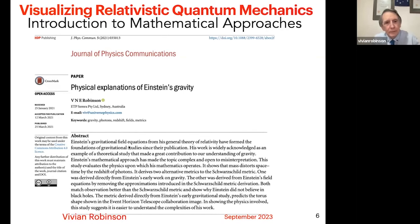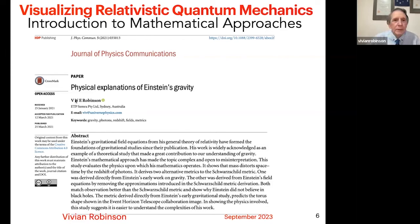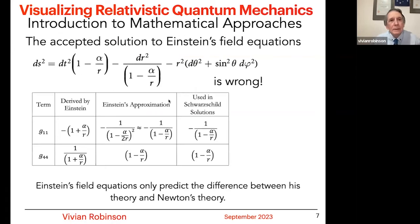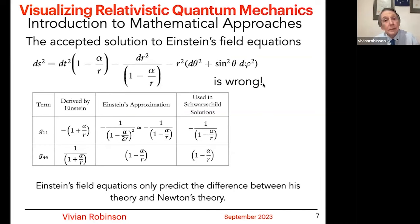Well, two and a half years ago, the Institute of Physics published a paper that I've written on physical explanations of Einstein's gravity. A major feature of that was that I showed that Einstein's mass-distorting spacetime was producing photon redshift. Now, what I'd like to show is that the accepted solution everybody knows is dc times 1 minus alpha over r, etc. Well, it's wrong.